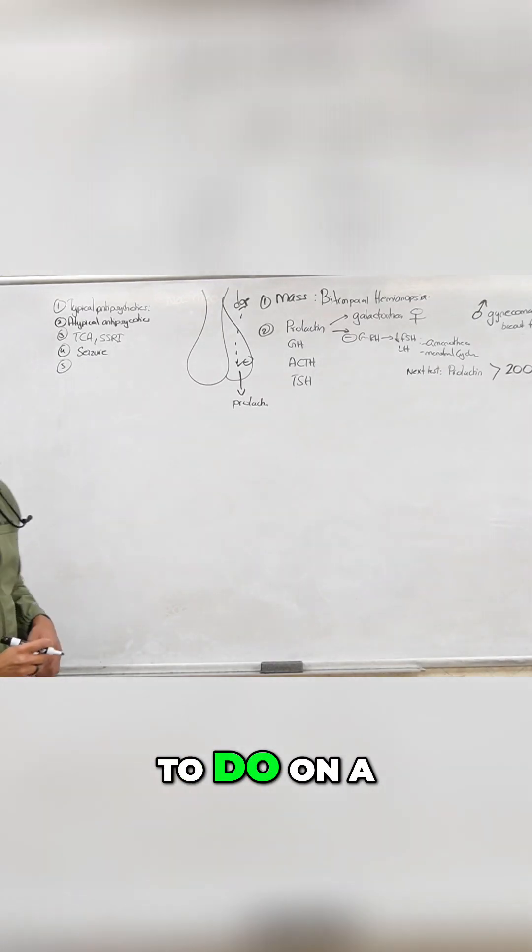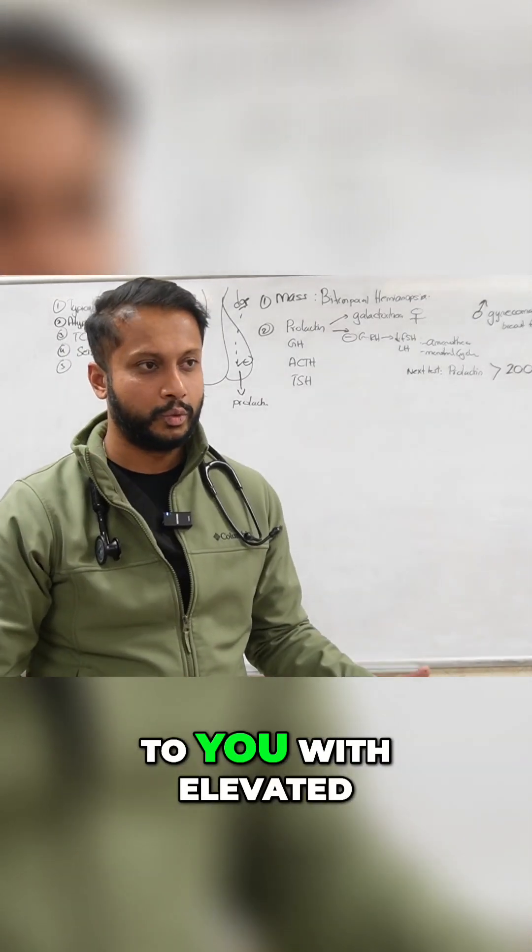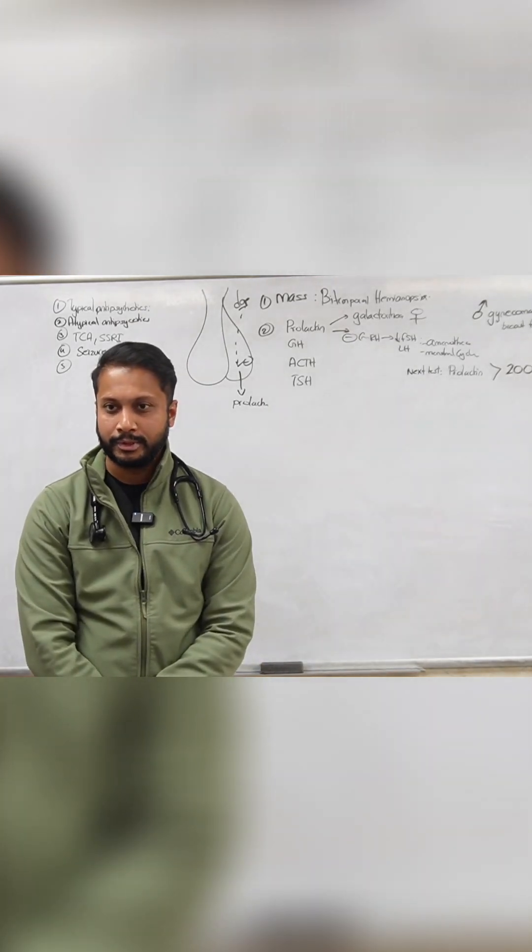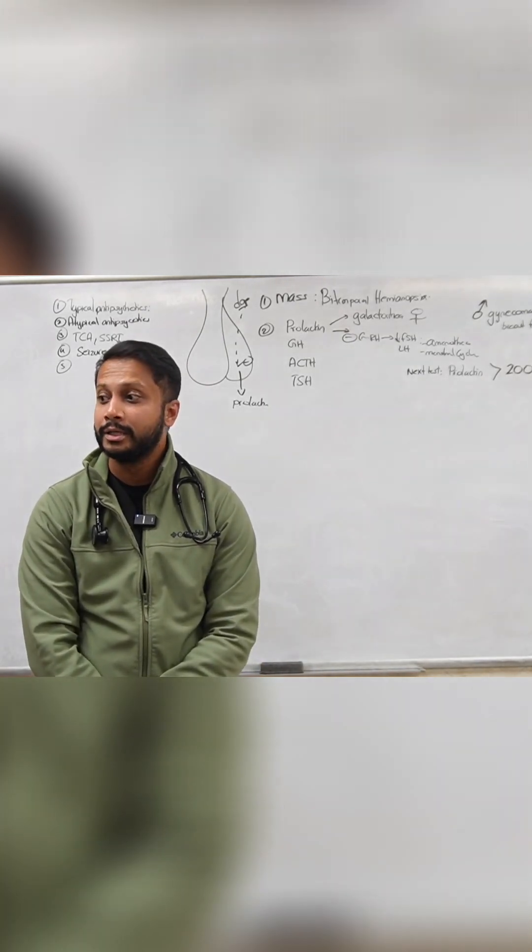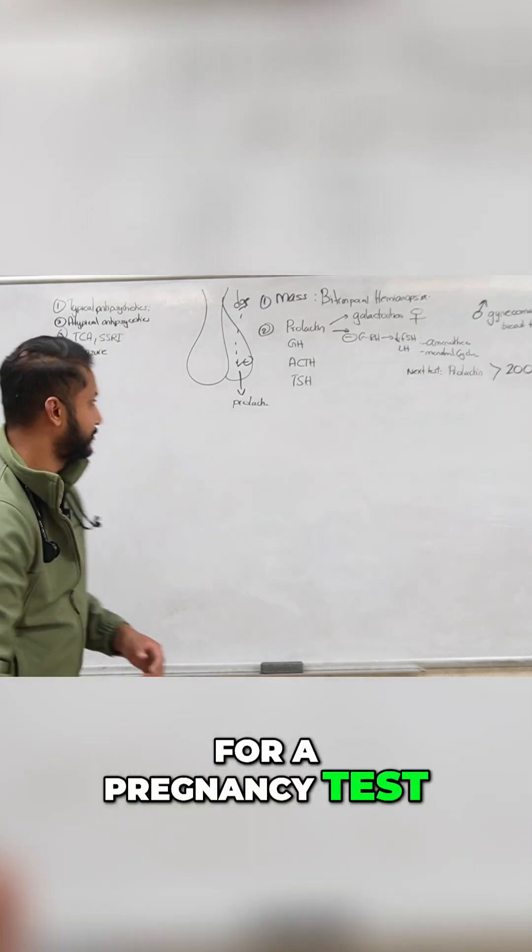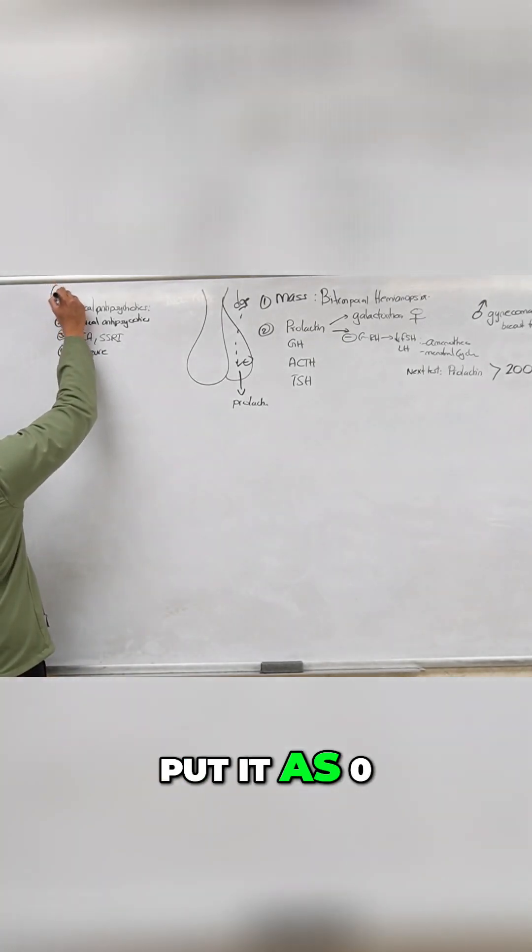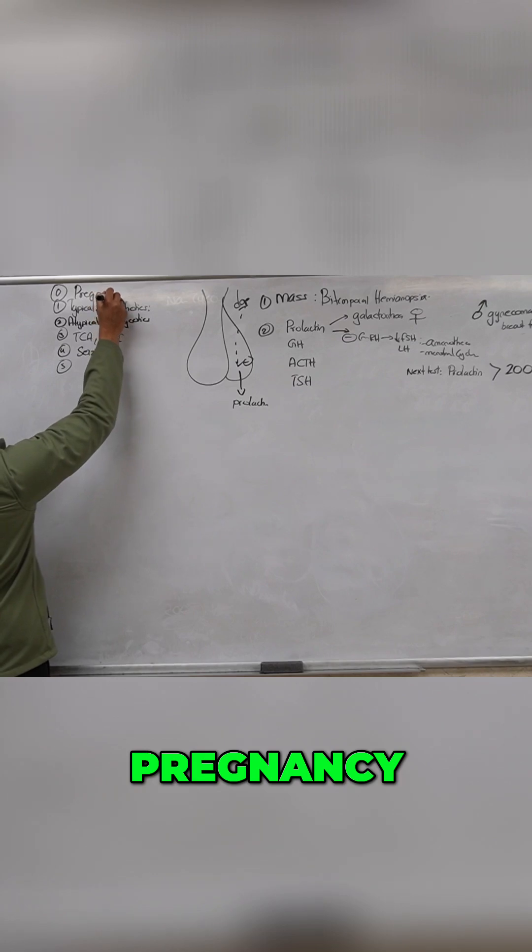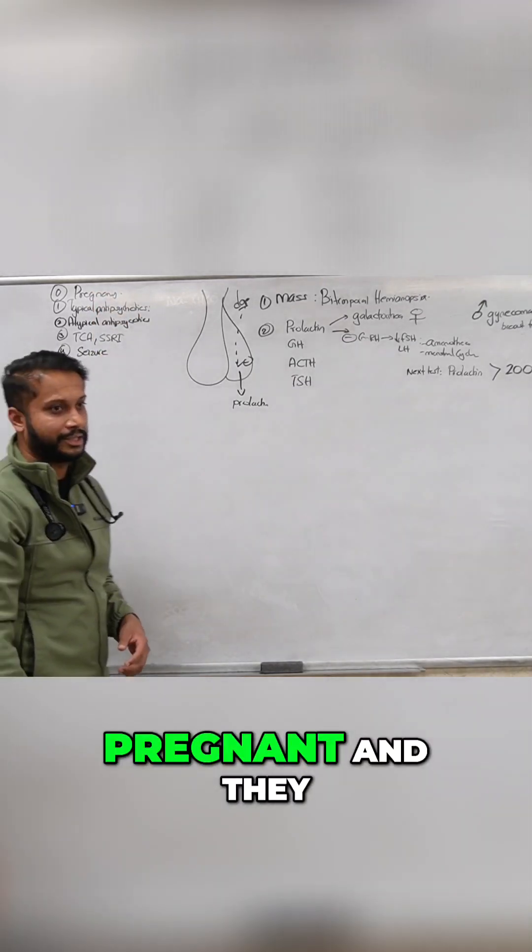What is the number one thing you want to do on a patient when they present to you with elevated prolactin and galactorrhea? Yes, you want to check for a pregnancy test, right? So number zero, I'm going to put it as pregnancy. You want to see if the person is actually pregnant, and that could explain all of it.